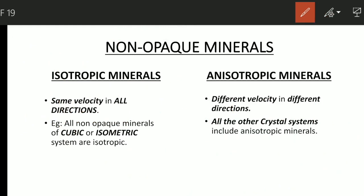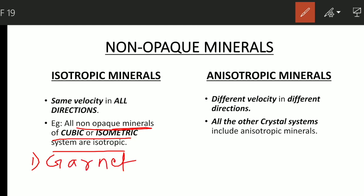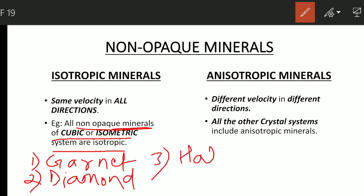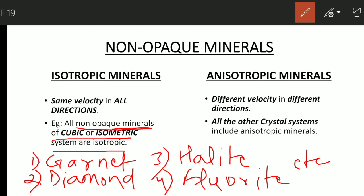Now let's see examples. For isotropic minerals, the non-opaque minerals of the cubic or isometric system are isotropic — this is very important. All the non-opaque minerals which crystallize in the cubic or isometric system — like garnet, diamond, halite, and fluorite — are isotropic. You can relate this to the fact that the cubic system has the maximum number of symmetry elements, so they exhibit isotropic nature.